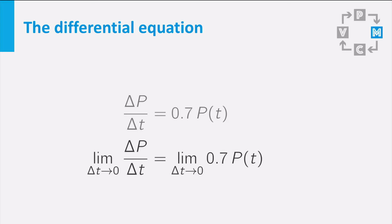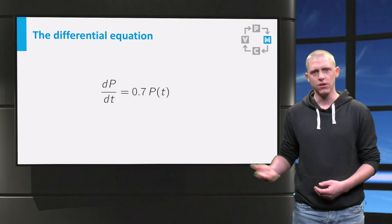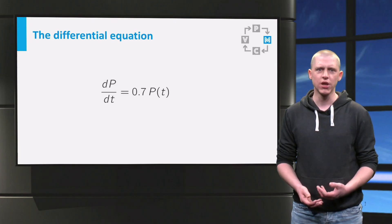Now take the limit of the equation as delta t tends to 0. The limit in the right hand side now is easily calculated, since there is no delta t in there. So this part equals 0.7 times P. The left hand side is exactly the definition of the derivative of P. Thus we arrived at the following equation: the derivative of P equals 0.7 times P. This equation is a differential equation, an equation containing a derivative.